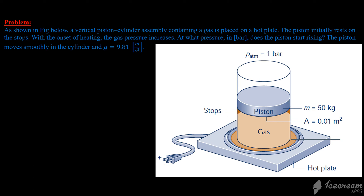In this problem we have a figure showing a vertical piston-cylinder assembly containing a gas, placed on a hot plate. The piston initially rests on the stops. With the onset of heating, the gas pressure increases. We need to find at what pressure in bar the piston starts rising. The piston moves slowly and smoothly in the cylinder, and g equals 9.81 meters per second squared.